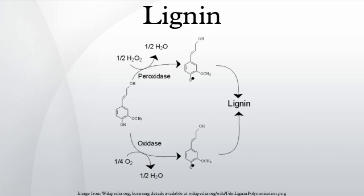Lignin is a cross-linked racemic macromolecule with molecular masses in excess of 10,000 U. It is relatively hydrophobic and aromatic in nature. The degree of polymerization in nature is difficult to measure, since it is fragmented during extraction and the molecule consists of various types of substructures that appear to repeat in a haphazard manner. There are three monolignol monomers, methoxylated to various degrees: p-coumaryl alcohol, coniferyl alcohol, and sinapyl alcohol.